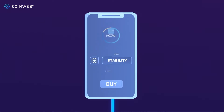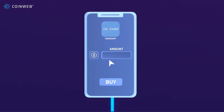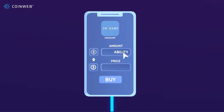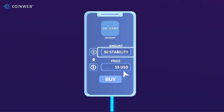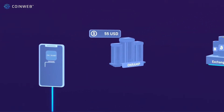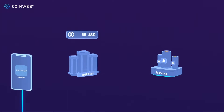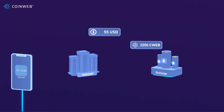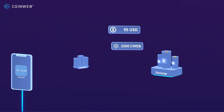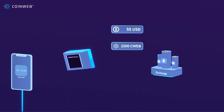In this example, let's say a customer buys 50 Stability tokens on OnRamp for $55. Once completed, OnRamp exchanges the $55 to C-Web on optimal exchanges, and in this example it receives 2,200 C-Web into its CoinWeb wallet.